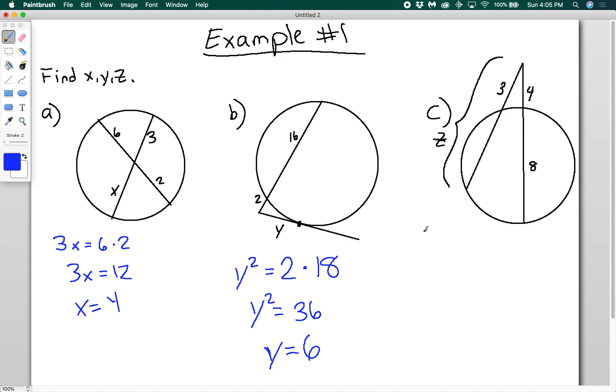And the final one, I can say that 3 times z—because z is the entire thing here—is going to be equal to 4 times 12. You're not doing 4 times 8, you're doing 4 times the entire segment, which is 8 plus 4 equals 12. So 3z equals 48, and z is therefore equal to 16. You can pretty easily find any missing sides you need of any kind of chords that are in angles like this.